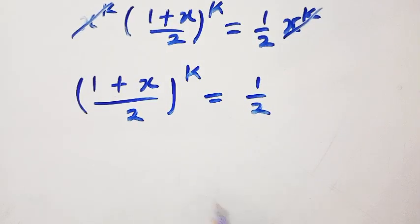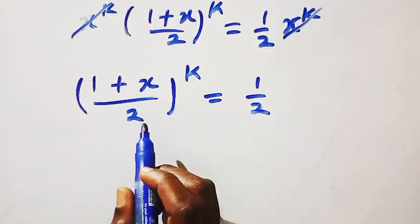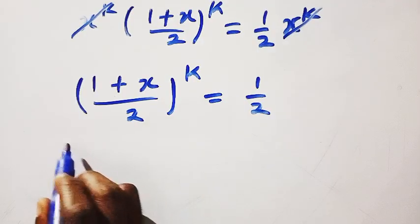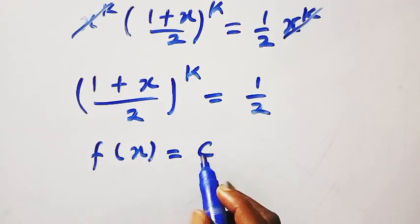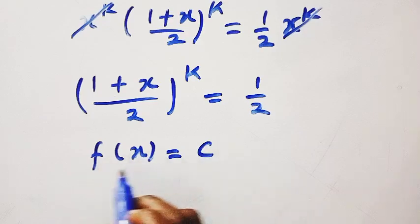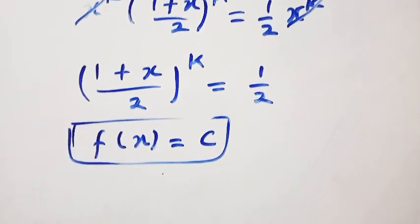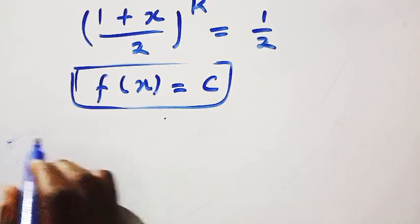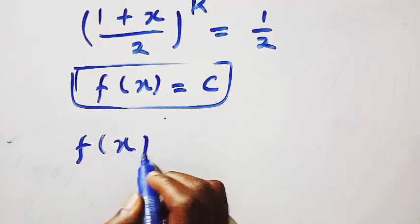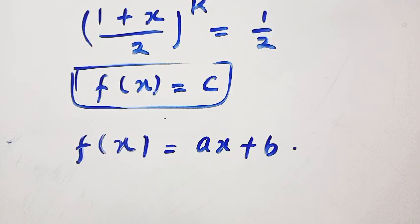This holds for all x, but the left-hand side depends on x, provided k is not equals 0. If k equals 0, the only value we have is f of x equals 0. This is the only solution that satisfies this, considering this proof. In another way, let's consider a linear form. If we consider a linear form, let f of x equals ax plus b, to check whether the only function is the constant function.